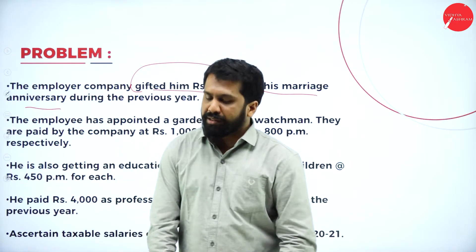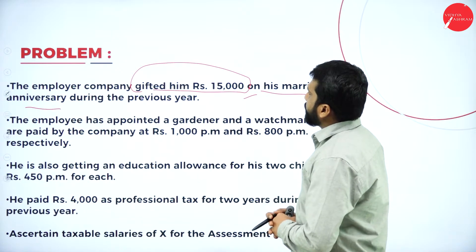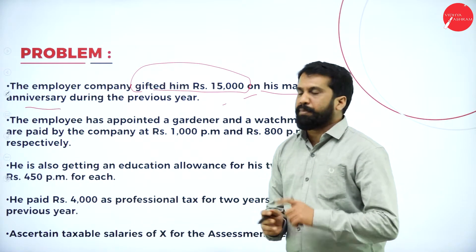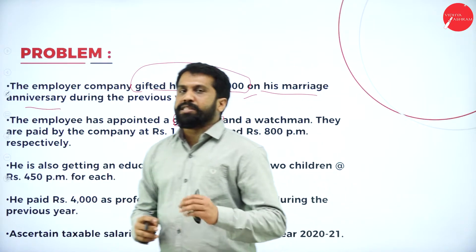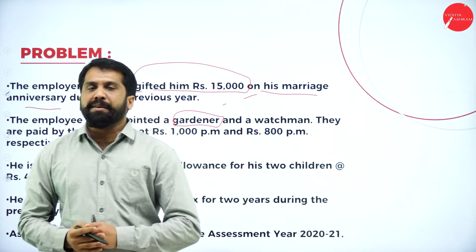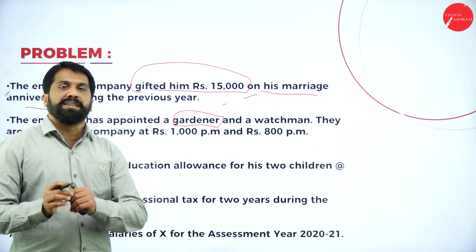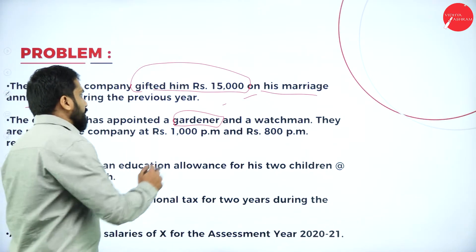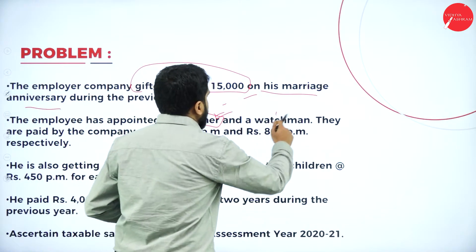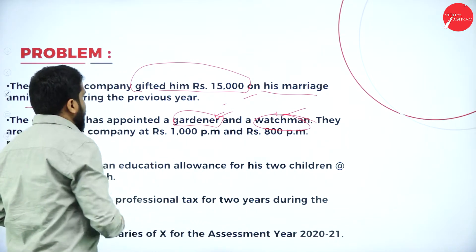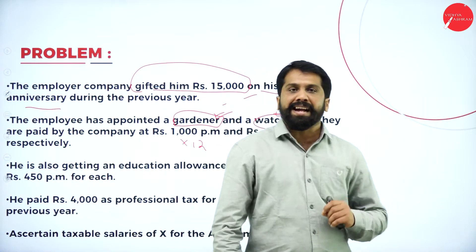The gift of 15,000 on marriage anniversary during the previous year is fully taxable. Next, the employee has been provided with a gardener and a watchman. As mentioned, gardener and watchman salaries paid by the employer are completely taxable — not exempted. So both — 1,000 per month into 12 and 800 per month into 12 — are considered taxable.